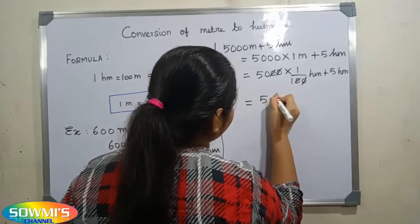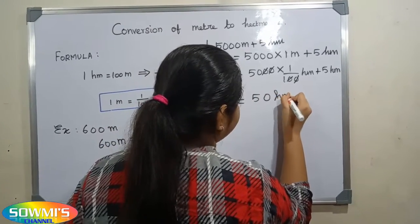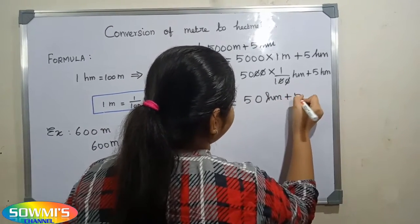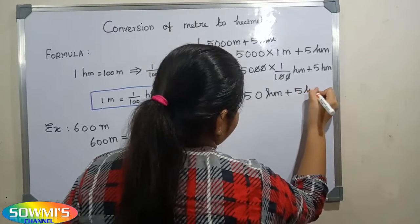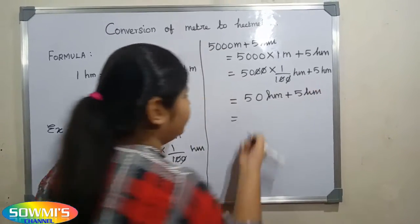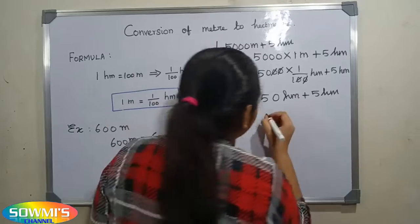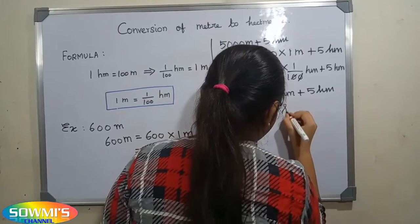So 50 hectometers plus 5 hectometers equals 55 hectometers.